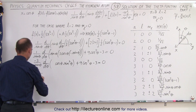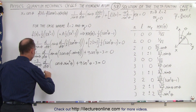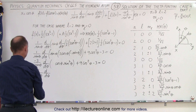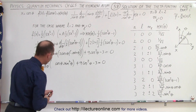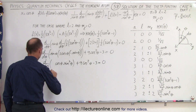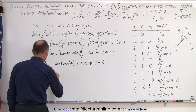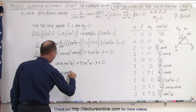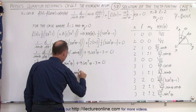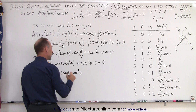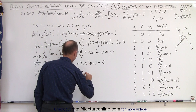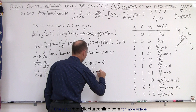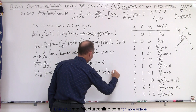Applying the product rule: we get the first, which is cosine of theta, times the derivative of the second — that is 2 sine theta times cosine of theta — plus the second, which is sine squared of theta, times the derivative of the first, which is minus sine of theta. Then we still have plus 9 times cosine squared of theta minus 3.